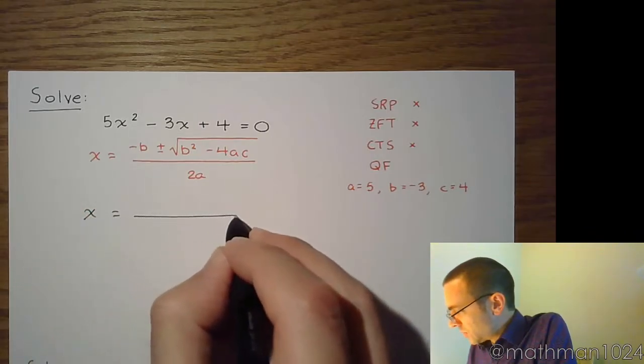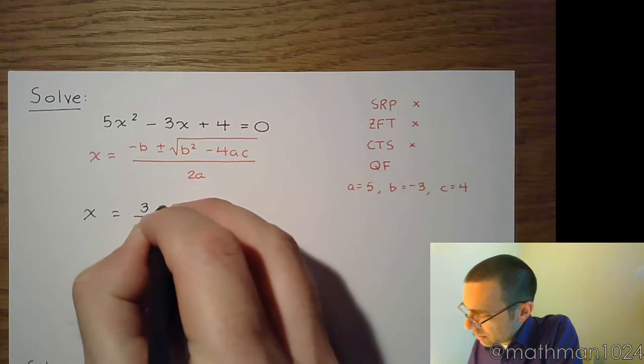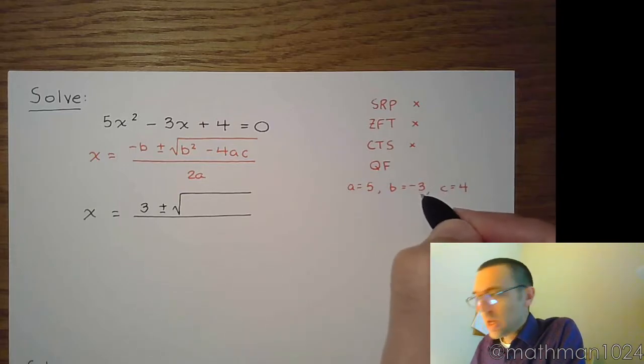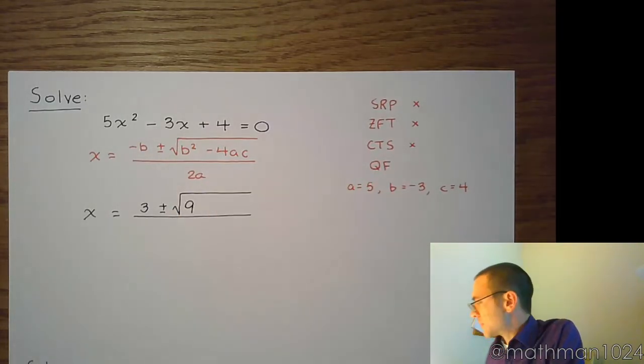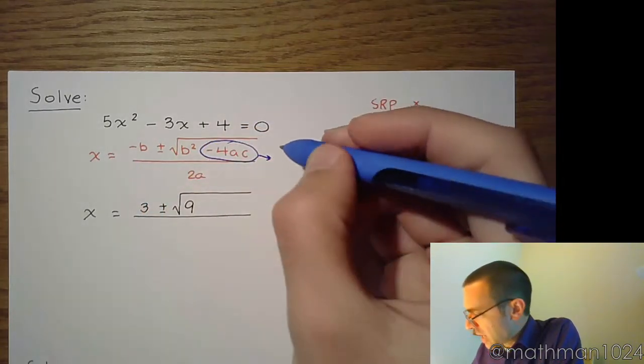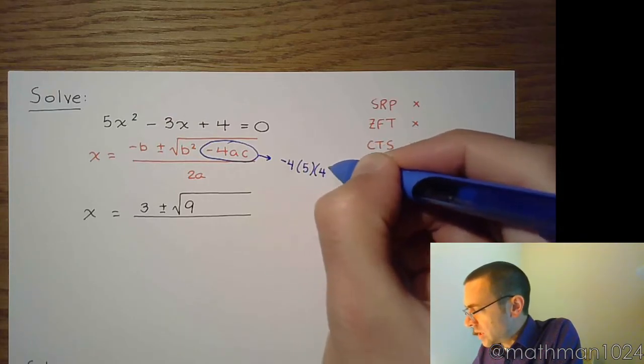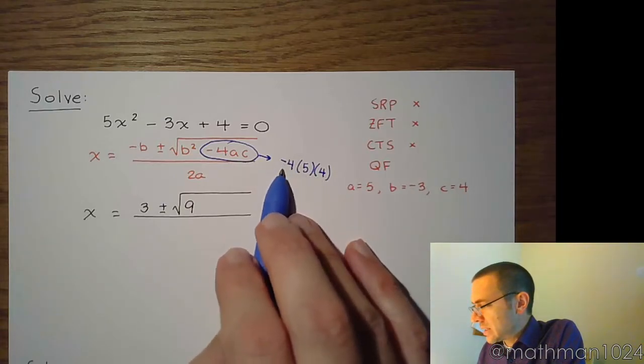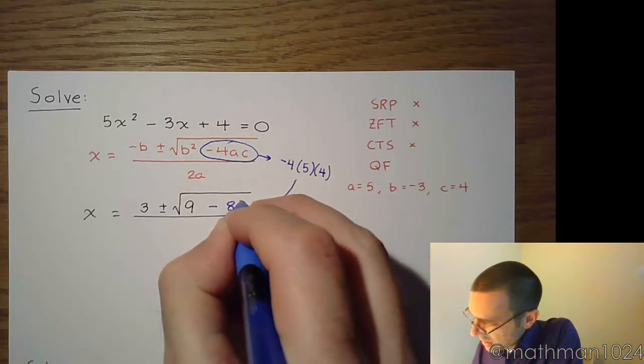So x is equal to negative b. Well, b is negative 3, so negative negative 3 is positive 3, plus or minus the square root of b squared. Whether it's positive or negative, b squared is going to be a positive, so you square the negative 3, you get positive 9, minus 4ac. Now, I like to take this guy off to the side and work that out. So it's negative 4 times a, 5, times c, which is 4. So 5 times 4 is 20, 20 times negative 4 is negative 80. So I'm going to put that inside the radical like that.